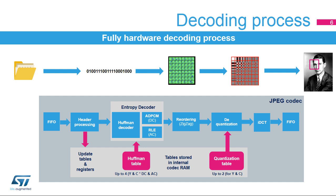The decoding process follows the JPEG baseline algorithm. The file data are sent to the input FIFO. The file header is parsed and the corresponding internal RAM tables are updated. Once the header has been parsed, an interrupt can be raised. The compressed data are sent through the entropy decoder to generate the 8-by-8 minimum coded units, or MCUs, using the zigzag ordering. The resulting 8-by-8 tables are dequantified and transformed through an inverse DCT, or IDCT, into the original picture data.